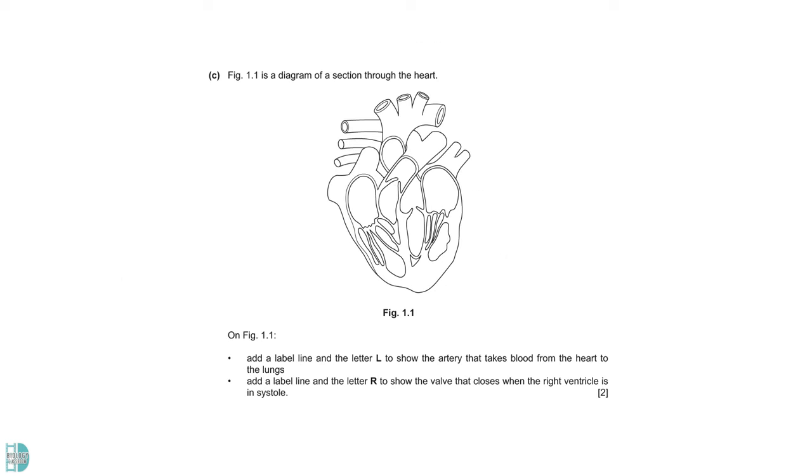In part C, you have a diagram of a section through the heart. You have to label two things. L, to show the artery that takes blood from the heart to the lungs. L is the pulmonary artery. It transports blood out of the right ventricle. In the diagram, here is the right ventricle. So, this is L.